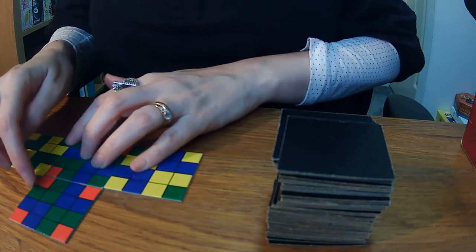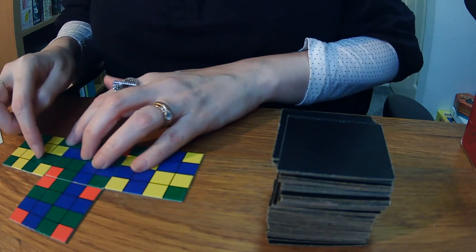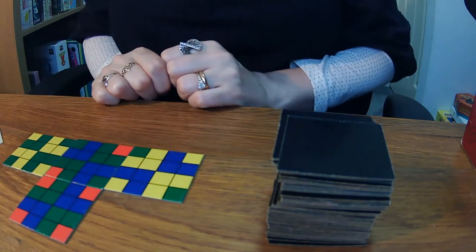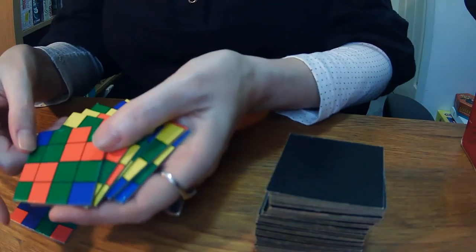So if I place that one there, I've got 1, 2, 3, 4, 5, 6, 7, 8, 9 points. Oh, 10, 11. And that's it. You just keep placing your tiles.